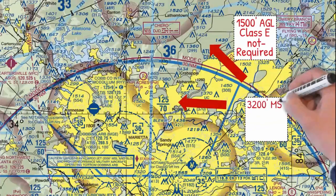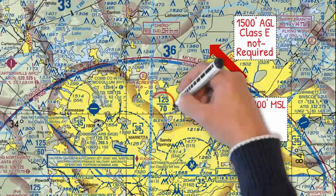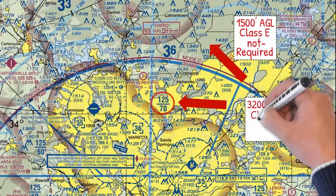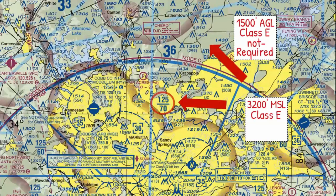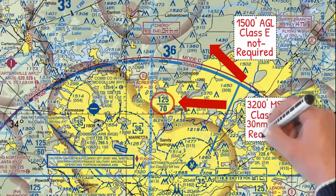How about if you're here at 3,200 feet MSL? The floor of Class B airspace is 7,000 feet. Which airspace are you in? Correct — Class E. Remember, you're inside the 30 nautical mile ring, so is ADS-B required? Yes.